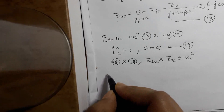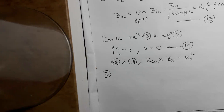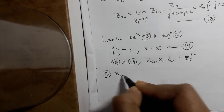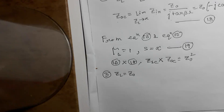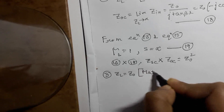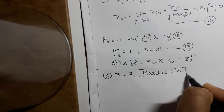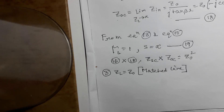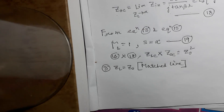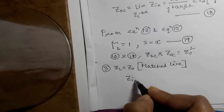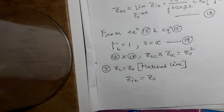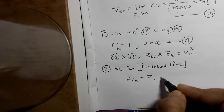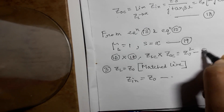Now for the third condition: if ZL equals Z0, that is if the line is matched, then from equation number 11 we can write that the input impedance Zin will be equal to Z0. That is equation number 20.